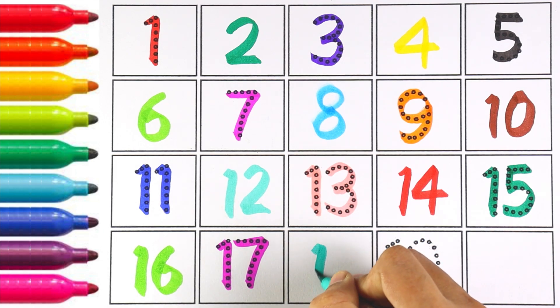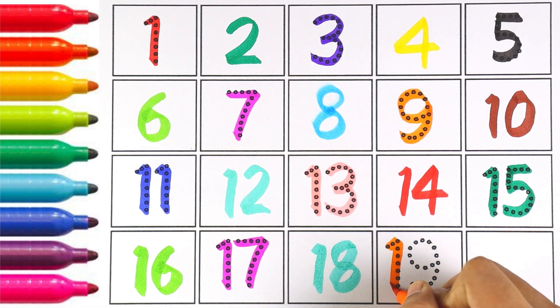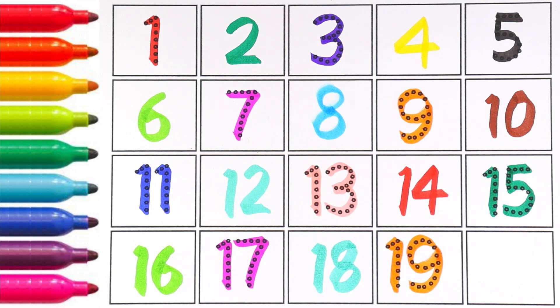Now I'm writing number eighteen. Number eighteen. Let's write number nineteen. One and nine makes the number nineteen. Number nineteen. Twenty. Two and zero makes the number twenty.